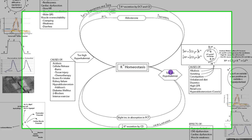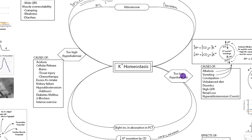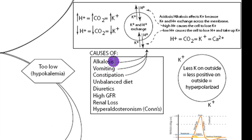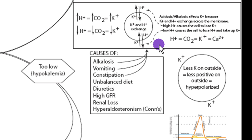Starting with terminology: it's called hypokalemia if potassium gets too low, and hyperkalemia if potassium gets too high. Now, alkalosis is going to cause hypokalemia. In alkalosis, there's low hydrogen outside the cell, so hydrogen inside the cell leaves to balance that loss. The potassium outside the cell then enters the cell in exchange, resulting in hypokalemia — too low potassium.